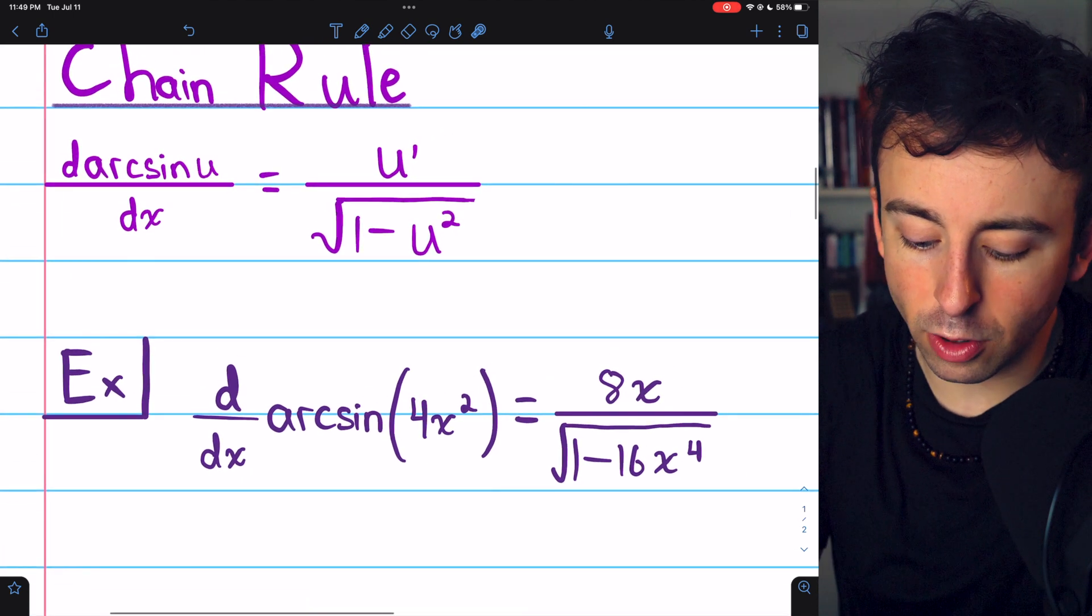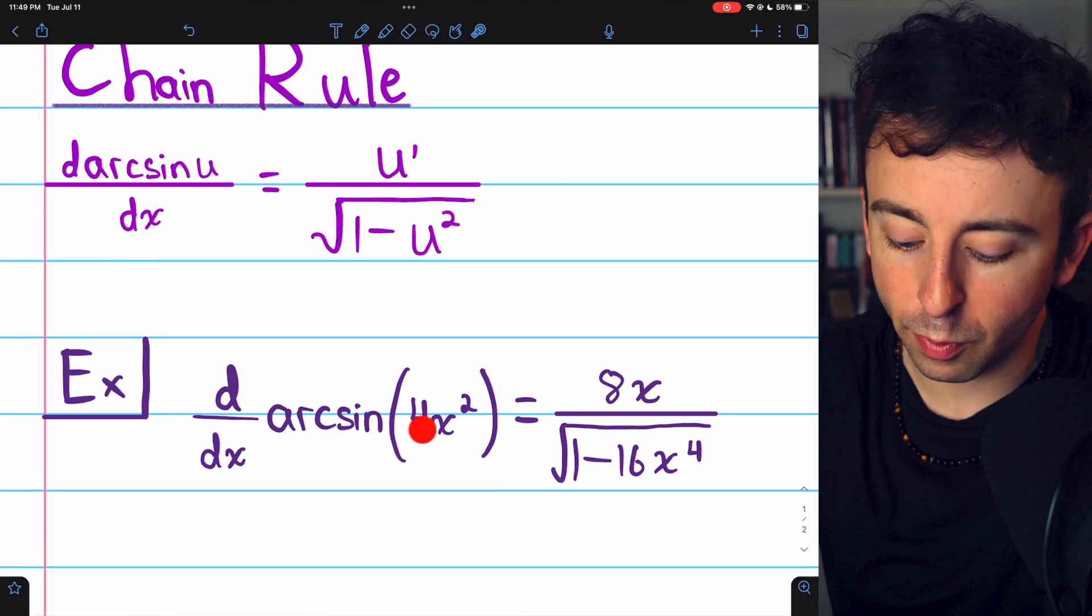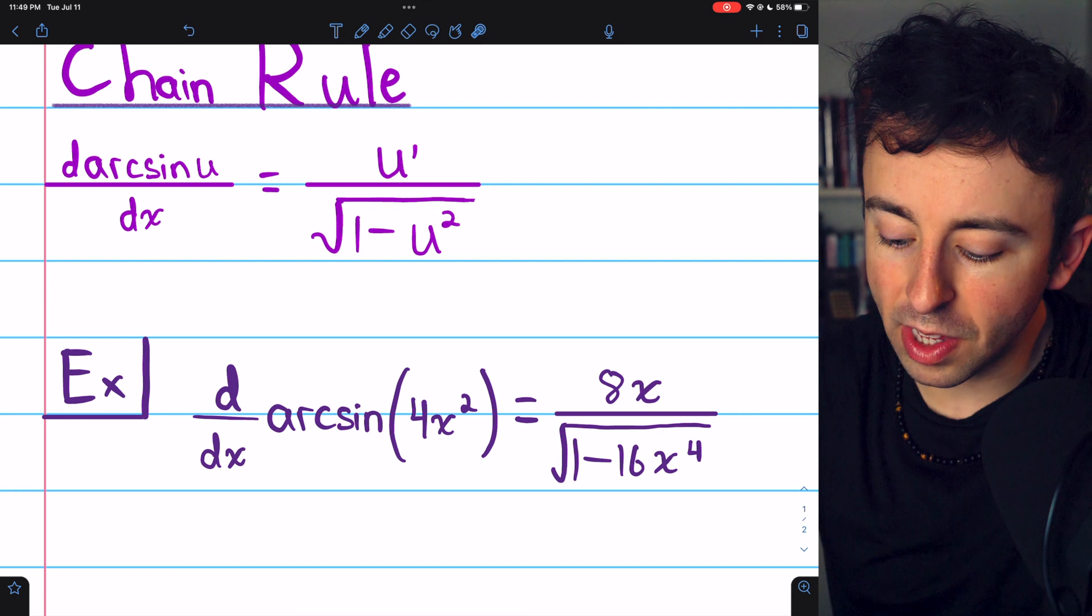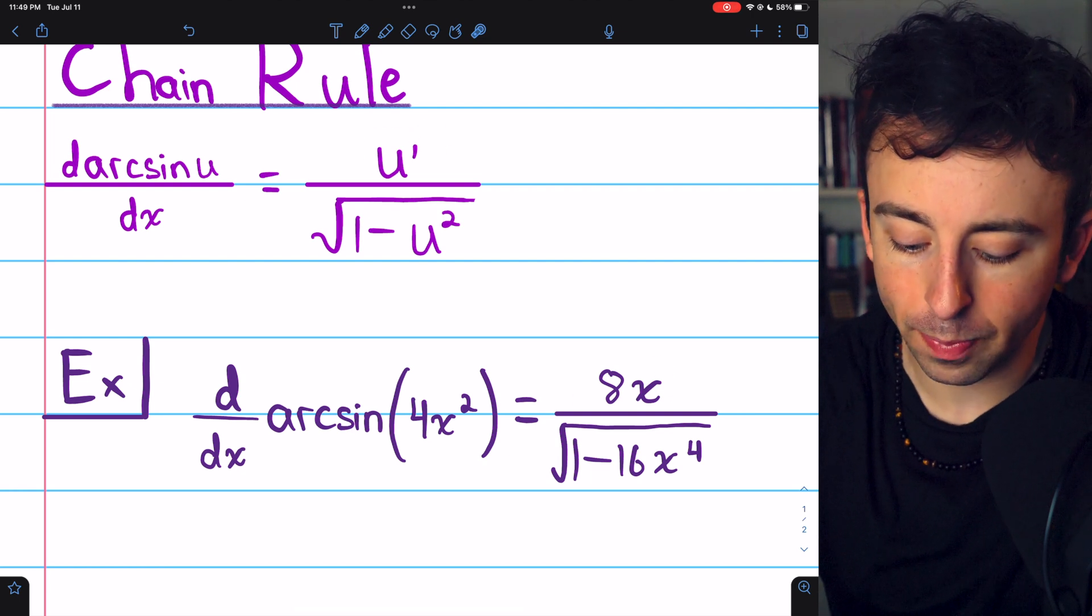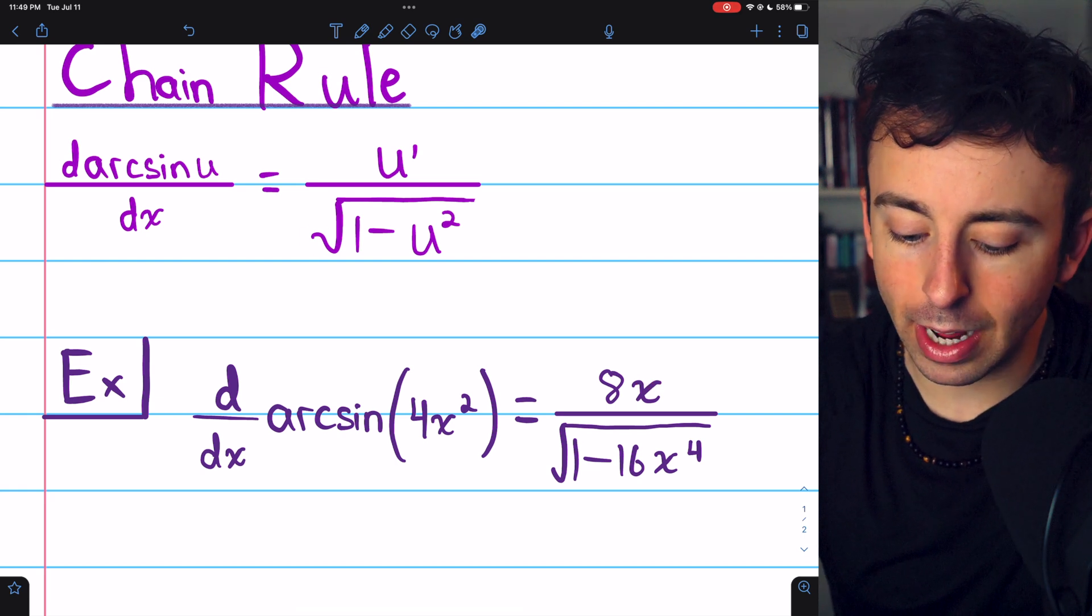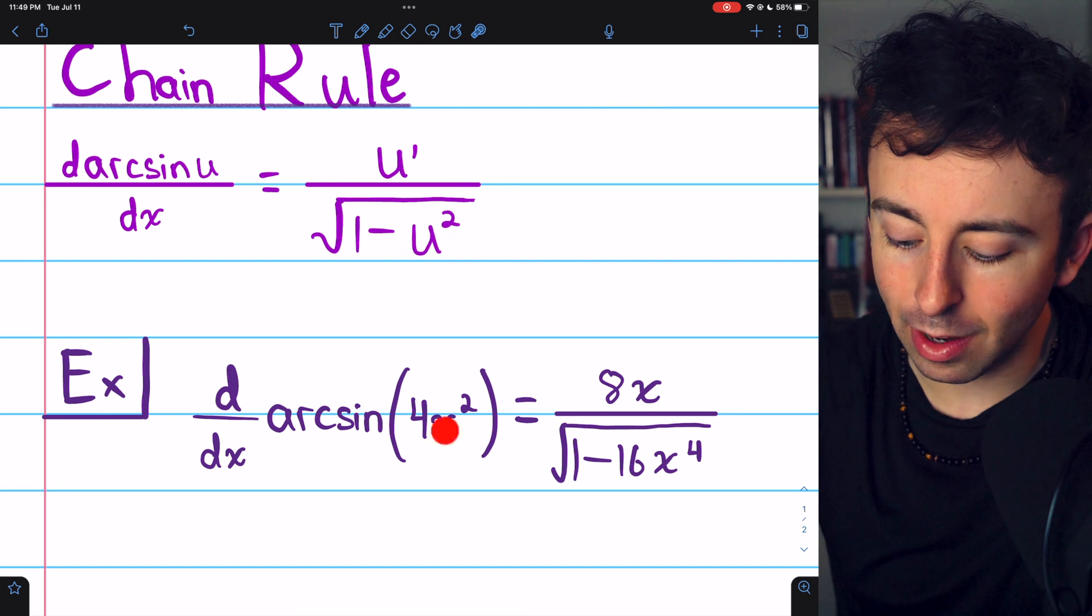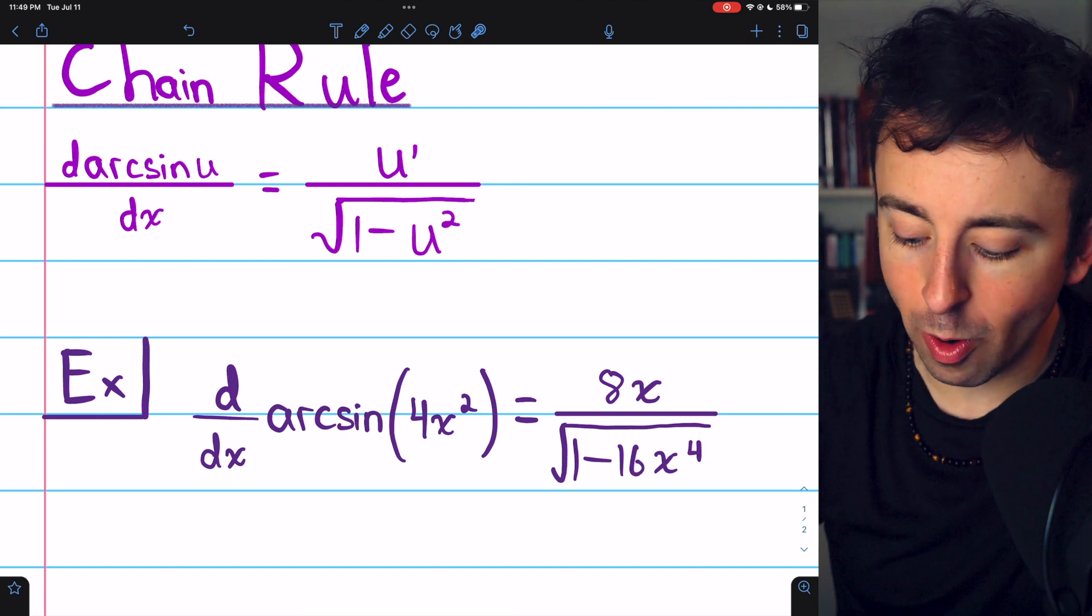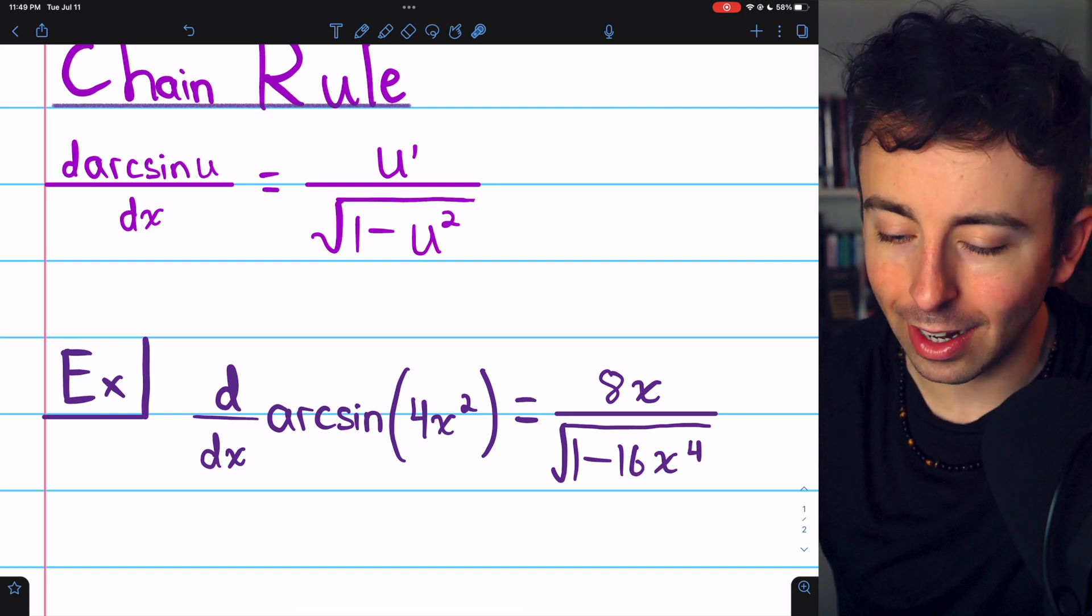As an example, if we had the derivative of arcsin(4x²), we would have u' in the numerator, so the derivative of that inside function, which is just 8x. And then in the denominator, we have the square root of 1 minus the inside function squared. 4x² squared is 16x⁴.